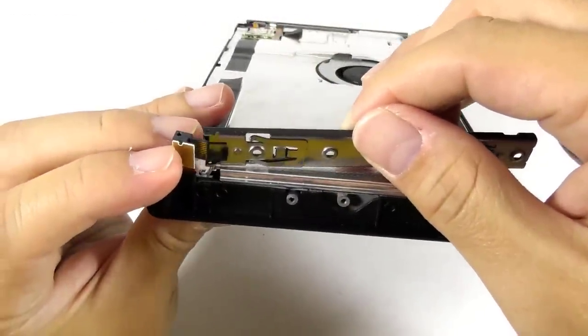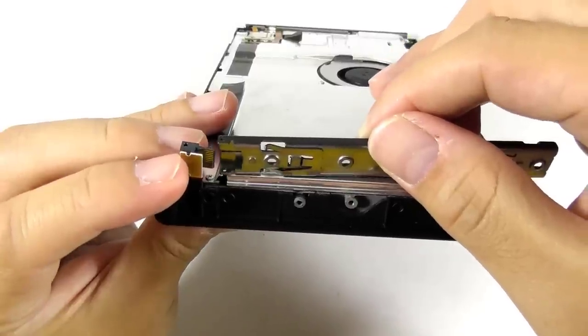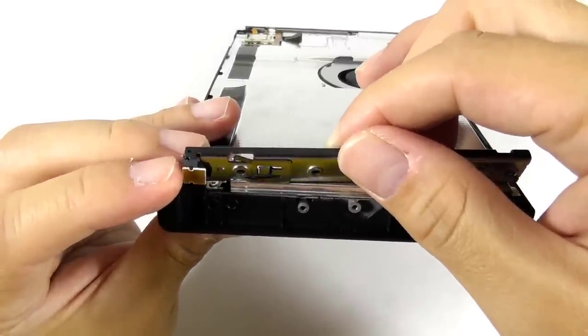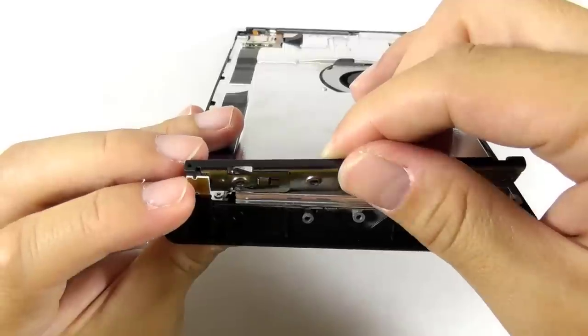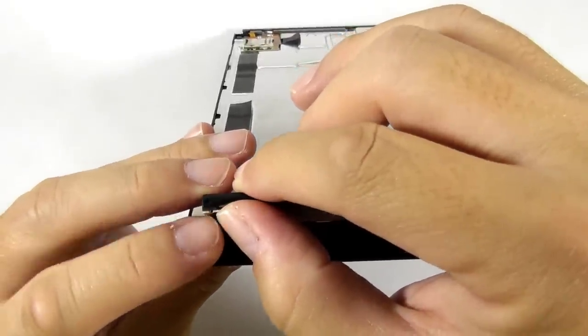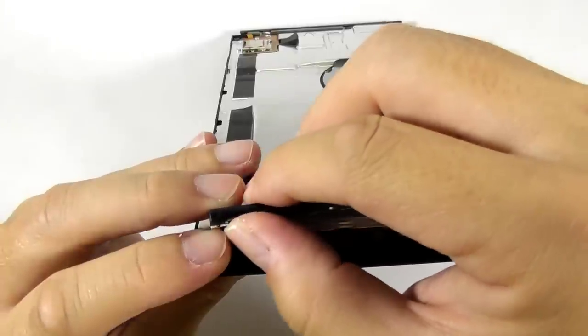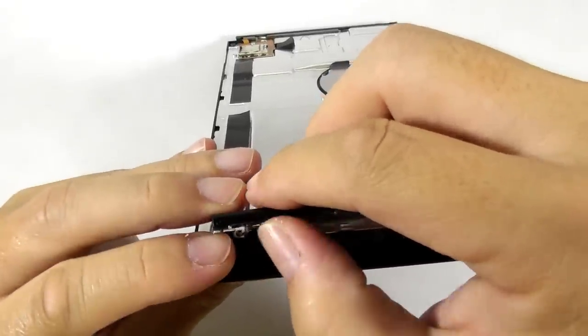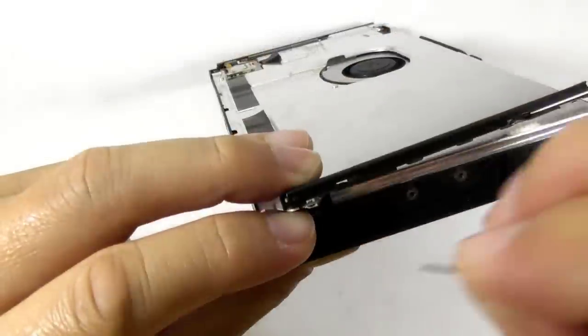The next step is the trickiest part. You need to reinstall the circuit board to the Joy-Con slider. Then reinsert the metal pin.